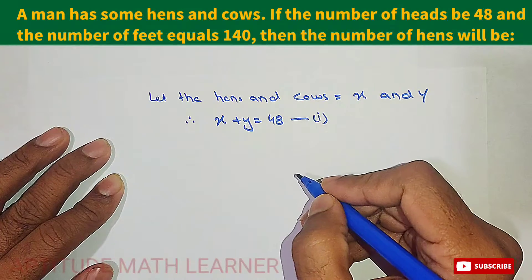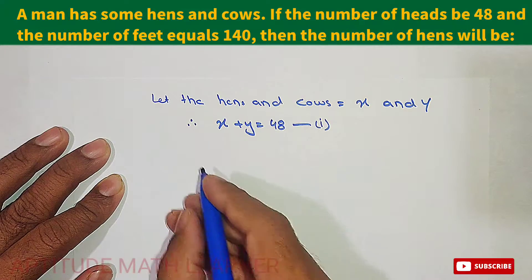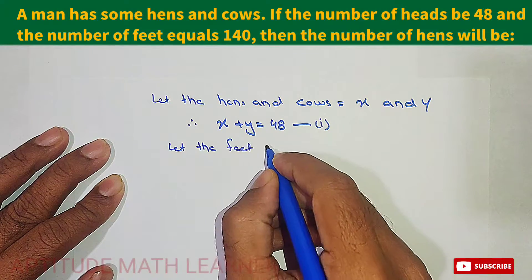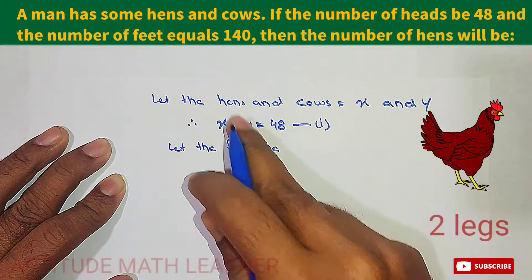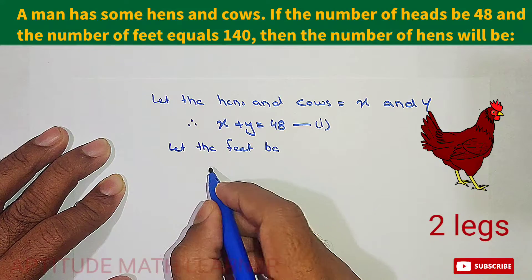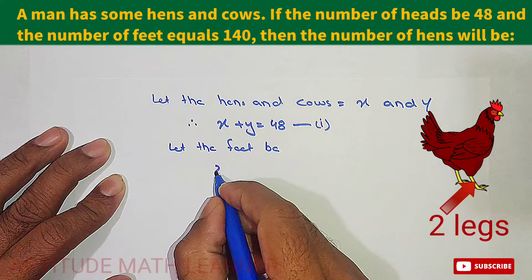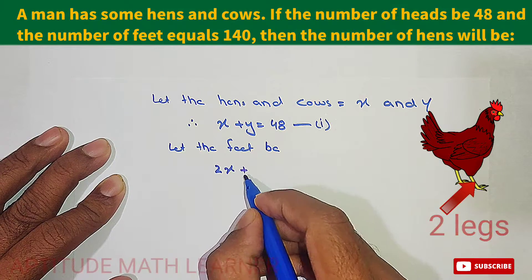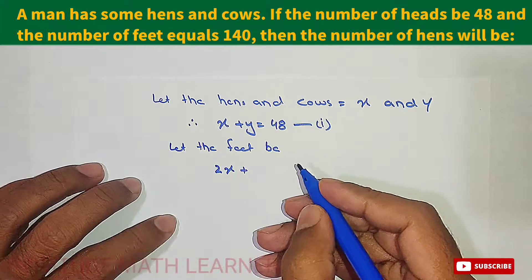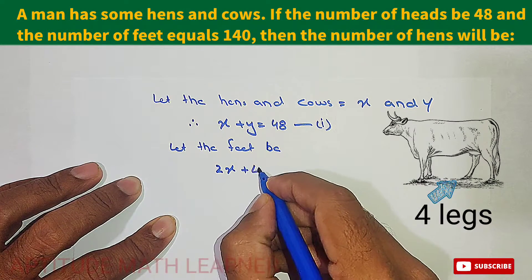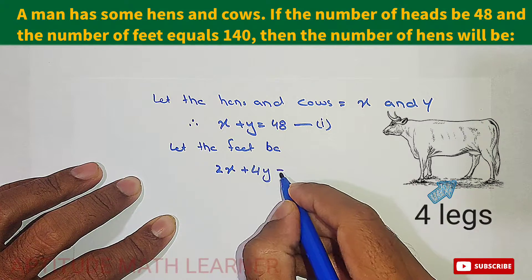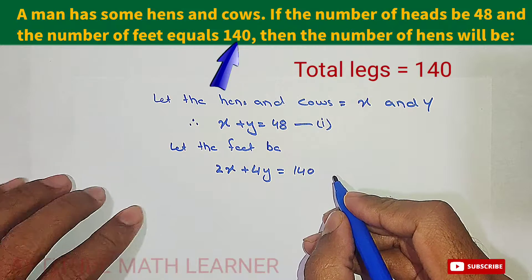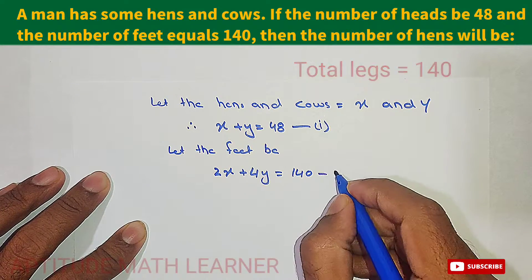The second part of the question says the number of feet is 140. A hen has two legs, so we write 2x for hens. A cow has four legs, so we write 4y for cows. Therefore 2x plus 4y equals 140. We take this as equation two.